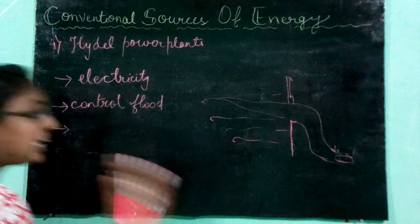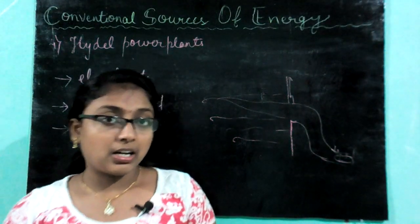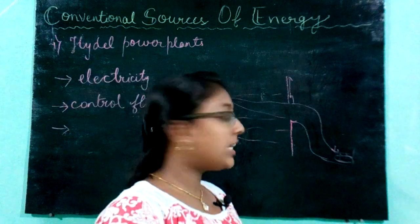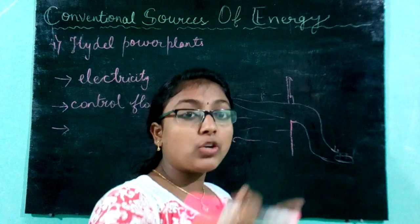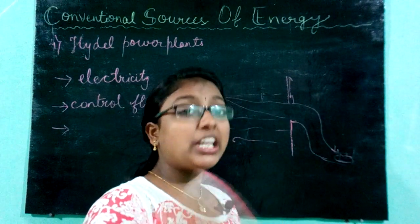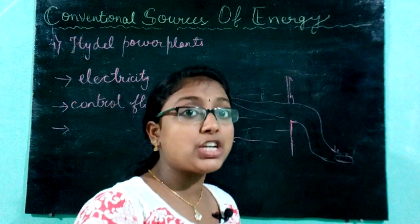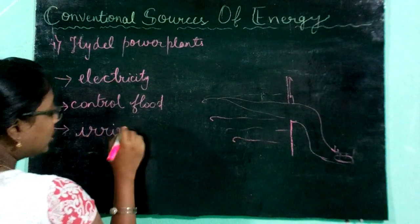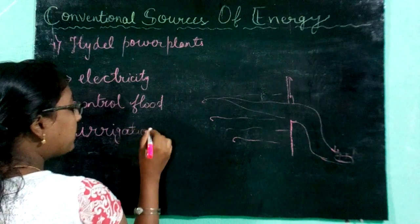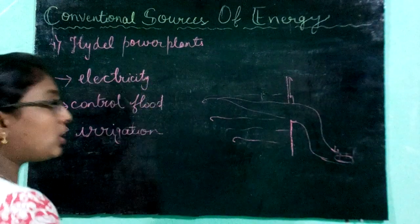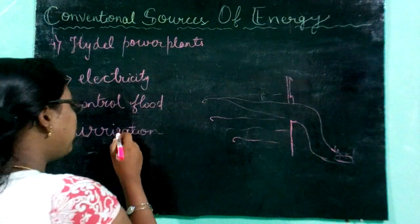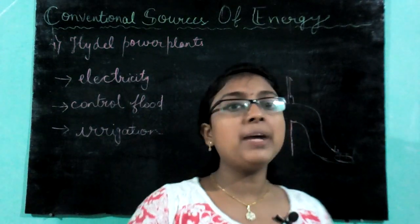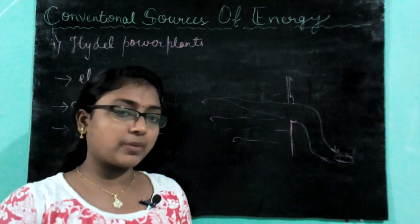The third purpose is irrigation. From these dams, many channels in the form of canals and dikes are created, through which water is distributed to the whole nearby area so that irrigation can be done properly, and agricultural output will be high. So it is a multi-purpose project: electricity, flood control, irrigation, navigation, and more.